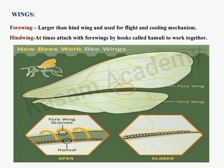Coming to the wings of honeybees, they consist of a forewing and a hindwing. The forewing is on the mesothorax and the hindwing is on the metathorax. The wings are used for flight, cooling the hive, and removing excess moisture from honey. The hindwing has hook-like structures at its anterior margin; during flight these hooks couple with the lower margin of the forewing so both wings move together efficiently to achieve higher flying and wing-beat speed.